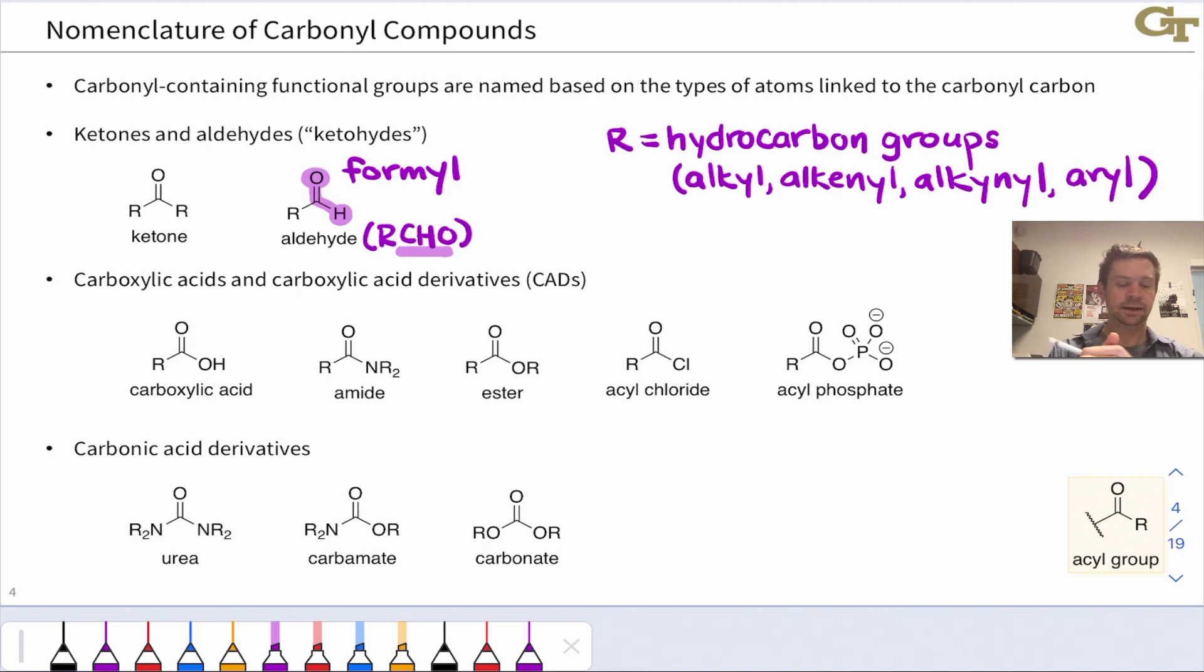Carboxylic acids contain a hydroxyl group linked to the carbonyl carbon along with some other R group. When we replace that OH group with another heteroatomic group, such as a nitrogen group, an alkoxy, a chlorine, even a phosphate, we get carboxylic acid derivatives. These are all characterized by lone pairs on the heteroatom linked to the carbonyl carbon.